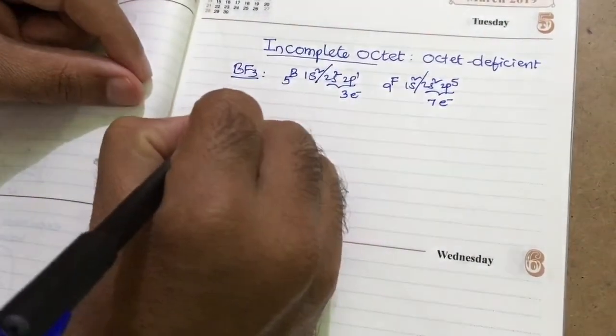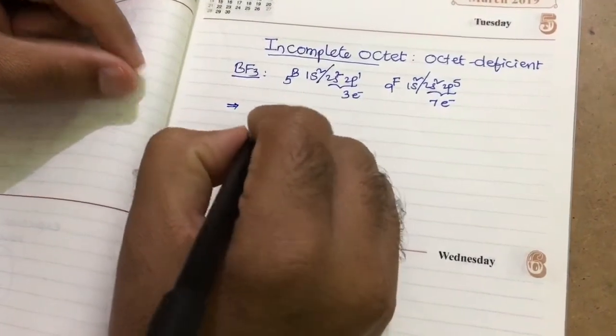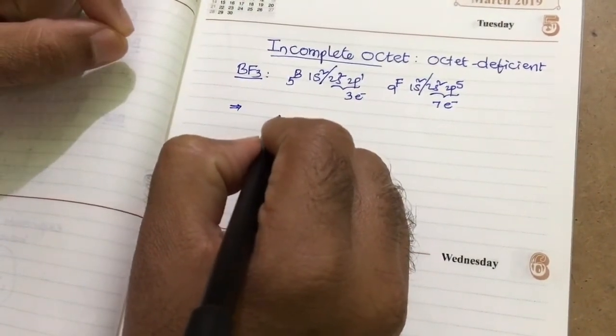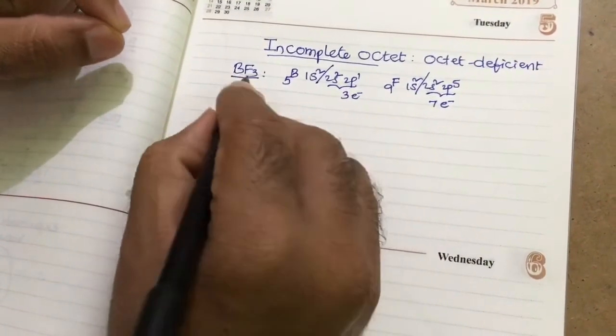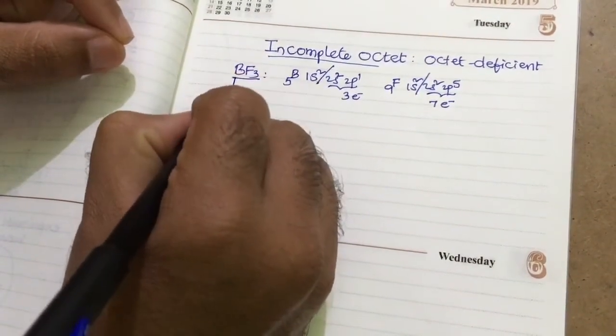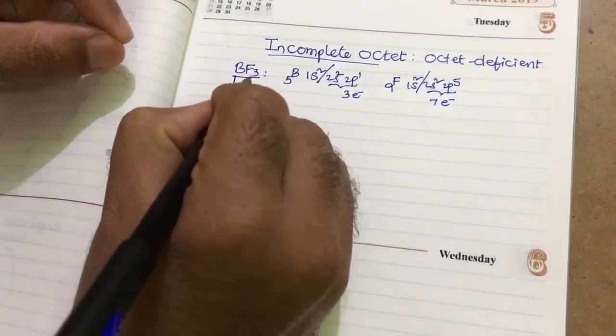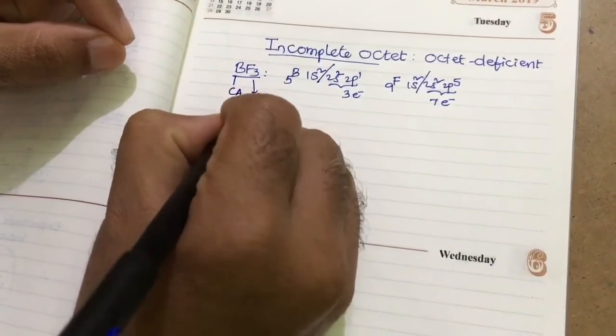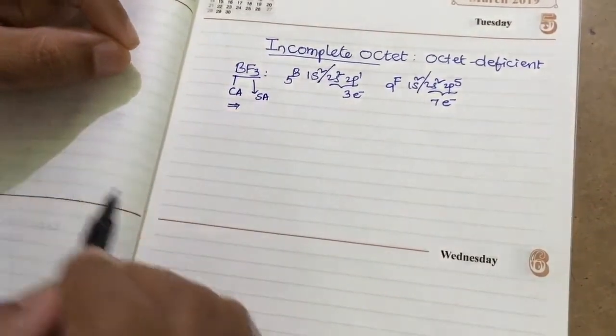Then how to draw its Lewis structure. We know that less electronegative atoms should be central atom. The more electronegative atoms should be the surrounding atoms. Then boron is a central atom, but fluorines are surrounding atoms.